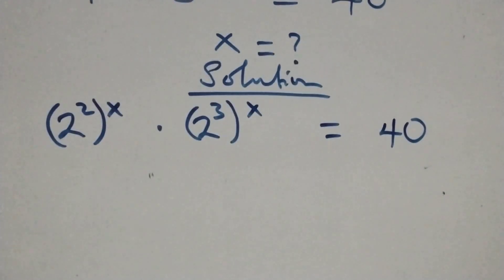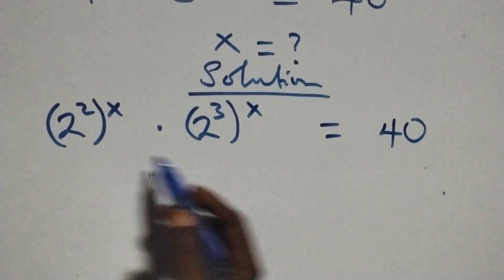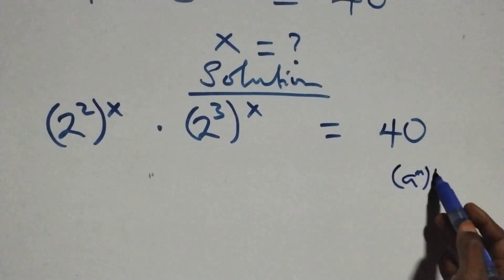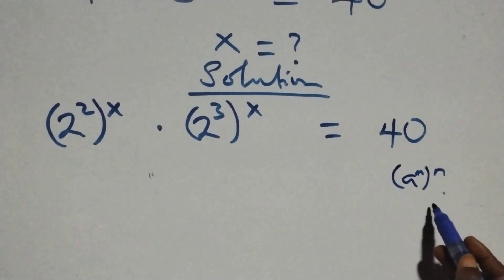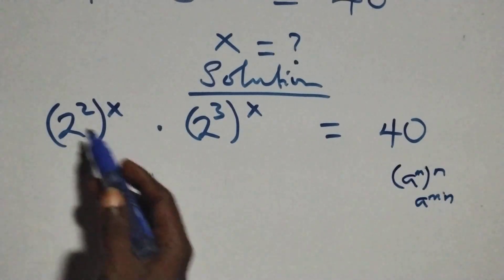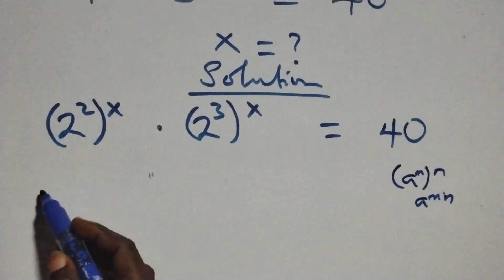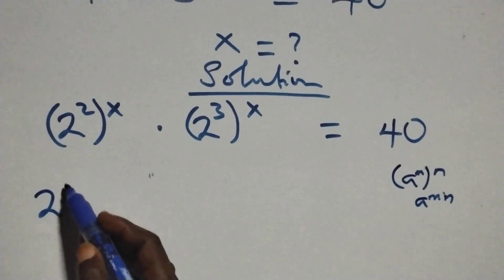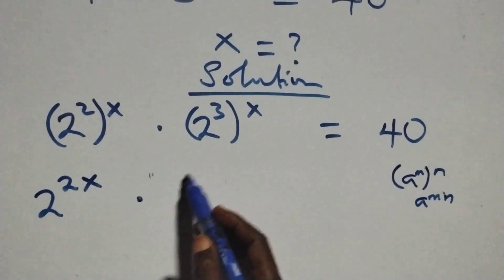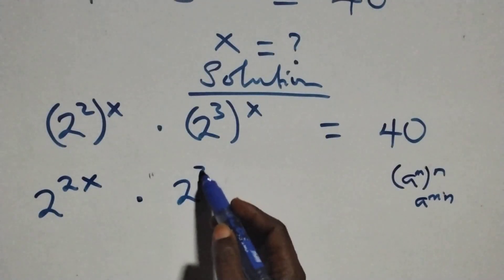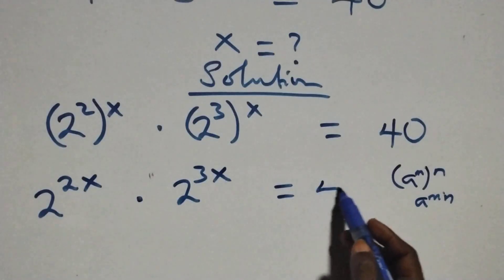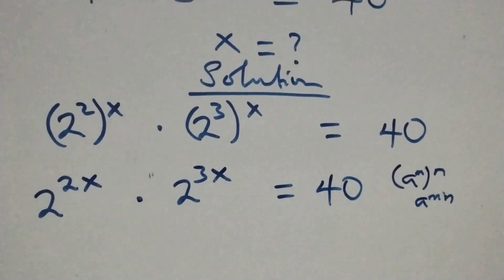Here we apply the law of indices: when we have a raised to power m, raised to power n, this is the same thing as a raised to power m×n. So this power multiplies and we have 2 raised to power 2x, times also 2 raised to power 3x, equals 40 on this side.